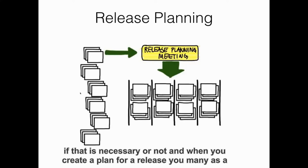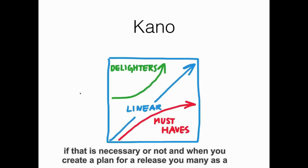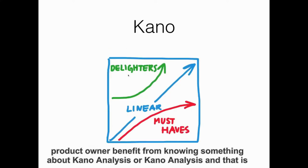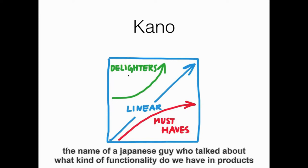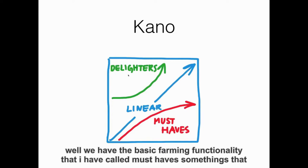When you create a plan for a release, you may, as a product owner, benefit from knowing something about Kano analysis. That's the name of a Japanese guy who thought about what kind of functionality we have in products.